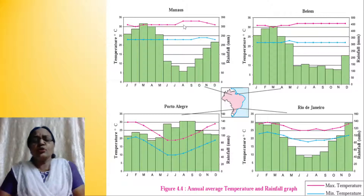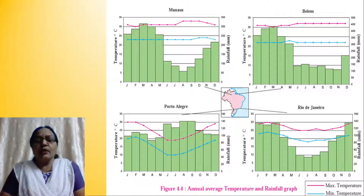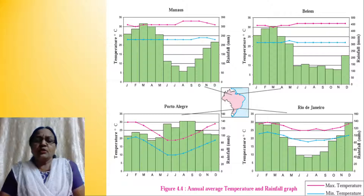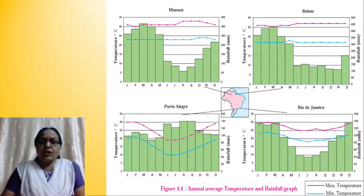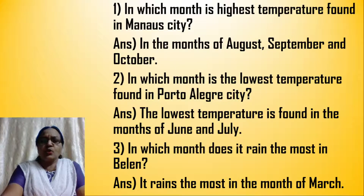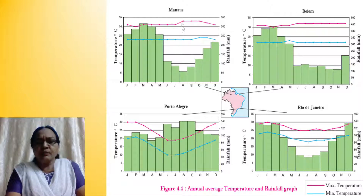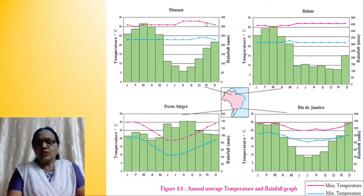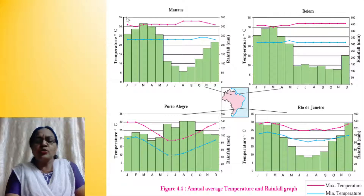The average annual range in temperature is the maximum temperature minus the minimum temperature. For the question — in which month is the highest temperature found in Manaus city — the highest temperature is experienced in the months of August, September, October, and November. For highest temperature, you look at the pink line graph.